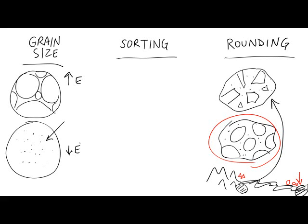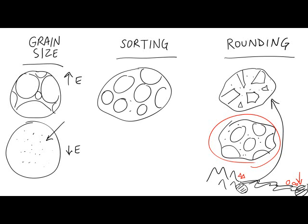Finally, there's this issue of sorting where, basically, you could have a rock which, again, let's use a conglomerate as an example of a poorly sorted sedimentary rock, lots of different sized pieces altogether. That can be contrasted with a sandstone where you've got, basically, sand-sized grains, but they're all about the same size.